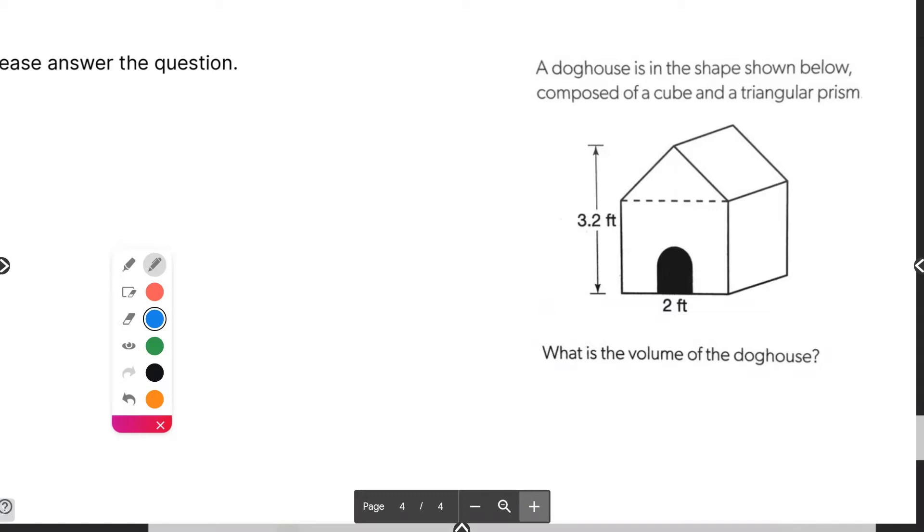Our formula sheet doesn't have the volume of a doghouse. You're right. A doghouse is composed of two shapes that we did practice. One of them is a cube, and the other one up here is the triangular prism. So your job is to find the volume of each of these.